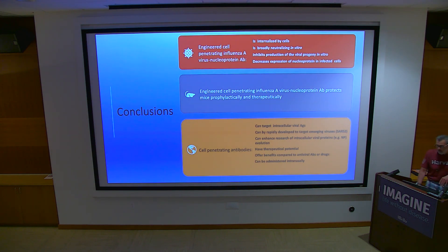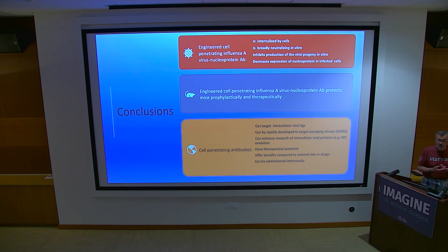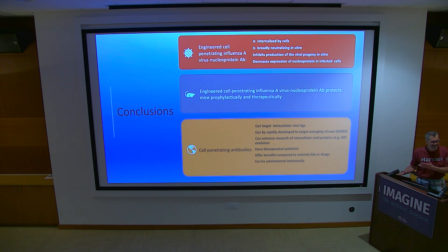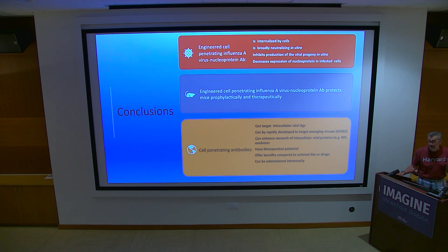Conclusions: we can take an antibody and target it to the cytosol. We weren't the first — a group in China did it with hepatitis virus — but the possibilities are limitless: you can target oncogenes and do a whole bunch of things. Why doesn't the immune system do this? Ivan could do it in two years; the immune system had 400 million years. Why doesn't it?